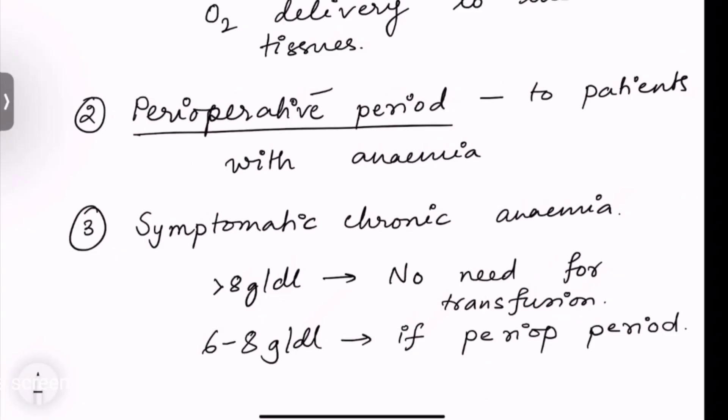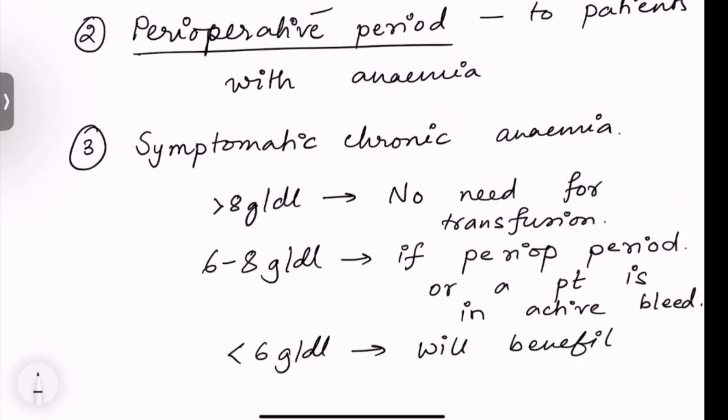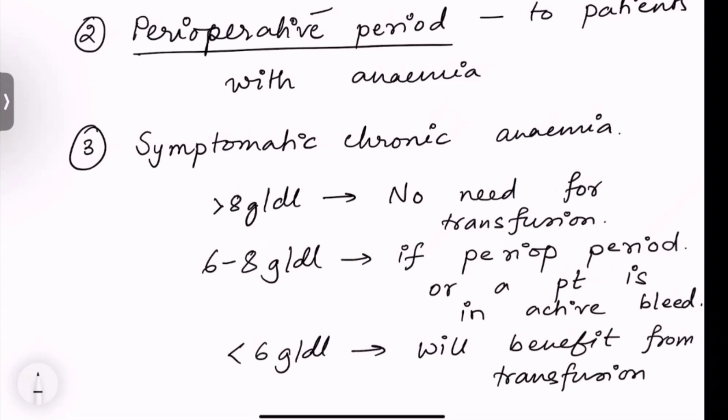If the patient is 6 to 8 grams per deciliter, you have to go for blood transfusion in case of perioperative period or if the patient is in active bleed. If the patient is less than 6 grams per deciliter, you have to give the patient blood transfusion.